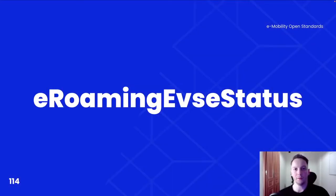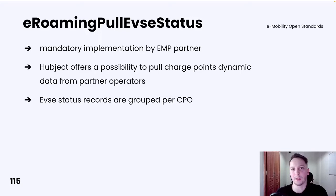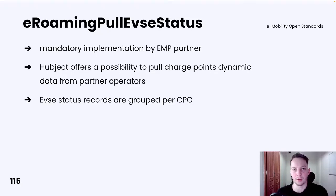eRoaming EVSE status service. Similar to the eRoaming EVSE data service, this service also has an EMP-dedicated operation which allows it to pull EVSE dynamic data from partner operators. This is done with the eRoaming pull EVSE status operation. Its implementation is mandatory for every EMP partner. It's worth mentioning that EVSE status records are grouped per specific CPO.